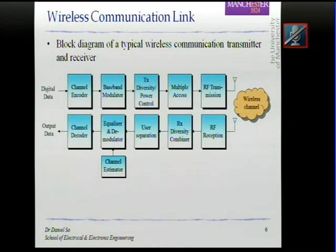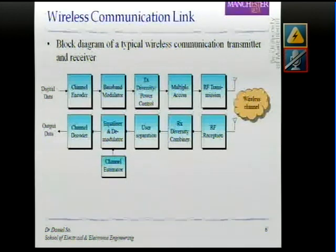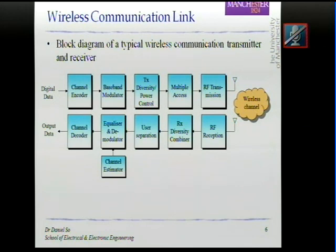There is also multiple access, which allows multiple users to access a channel at the same time. After all this, the signal goes through RF transmission. At that stage, the signal is still in the baseband, so we have to modulate it to the passband — the bandwidth that you are allowed to transmit on. Also, the signal power at this point is very weak, so it needs to be amplified.